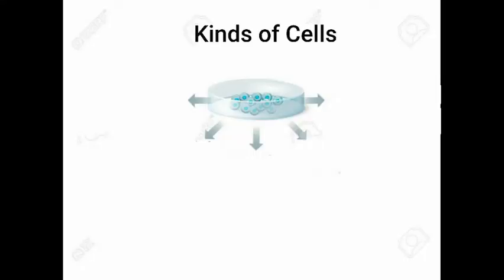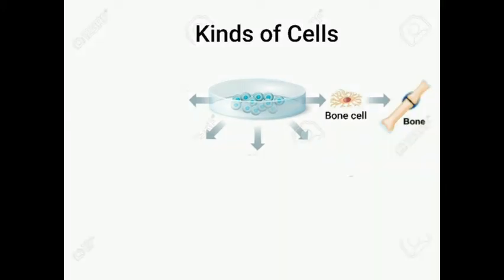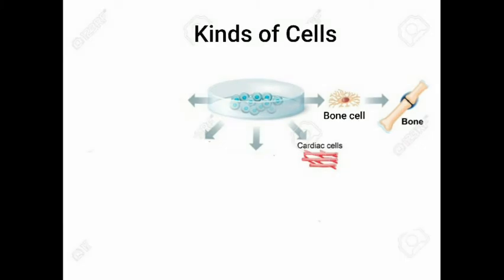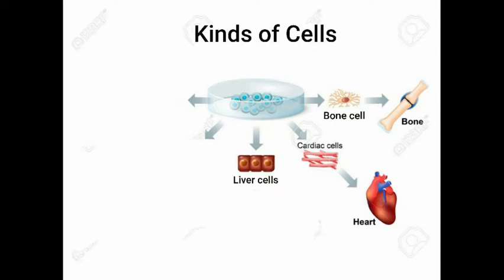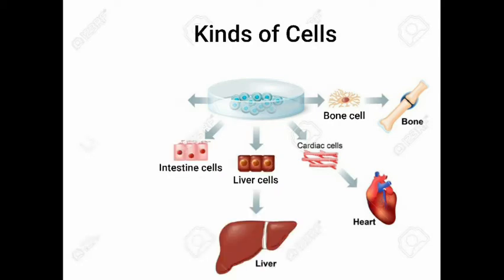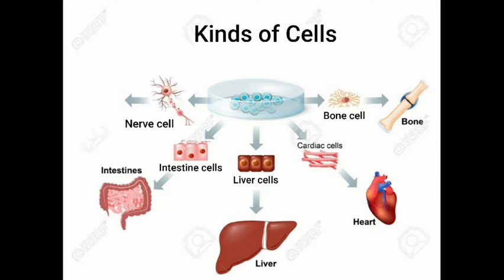There are different kinds of cells present in our body. Let's see them. First, bone cells, which make our bones. Then cardiac cells, which make our heart. Then liver cells, which make our liver. Intestine cells, which make our intestines. Then nerve cells, which make our brain.